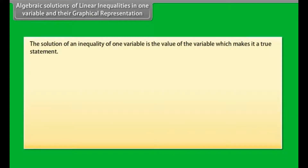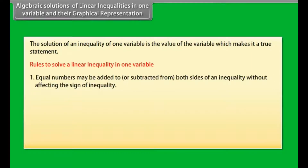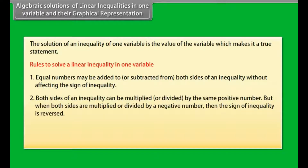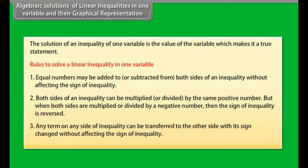Algebraic solution of linear inequalities in one variable and their graphical representation. The solution of an inequality in one variable is the value of the variable which makes it a true statement. Rules: 1) Equal numbers may be added to or subtracted from both sides of an inequality without affecting the sign of inequality. 2) Both sides can be multiplied or divided by the same positive number, but when multiplied or divided by a negative number, the sign of inequality is reversed. 3) Any term on any side can be transferred to the other side with its sign changed without affecting the sign of inequality.